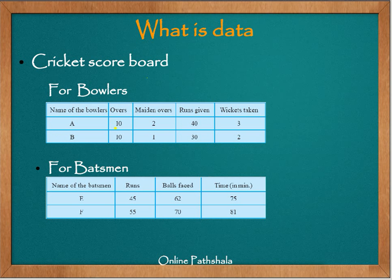Now if you see these numbers — 10, 2, 40, 3 — without actually being associated with overs, maiden overs, runs given, or wickets taken, or with bowler A, they don't really make any sense. They are just numbers. But when you associate 10 with the number of overs bowled by bowler A, and 2 with the number of maiden overs bowled by bowler A, it really makes sense — we are trying to tell something about bowler A and how he bowled in the particular cricket match.